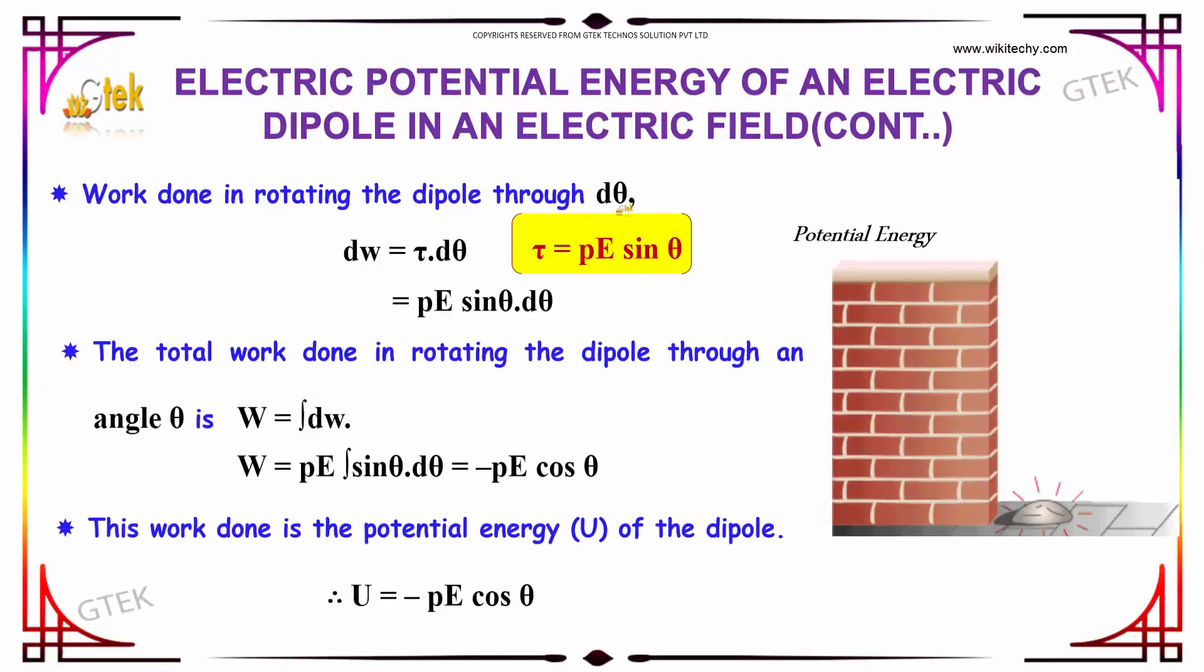Work done in rotating the dipole through dθ is dW = τ dθ. From the previous equation, τ = pE sin θ. Substituting, we get dW = pE sin θ dθ.